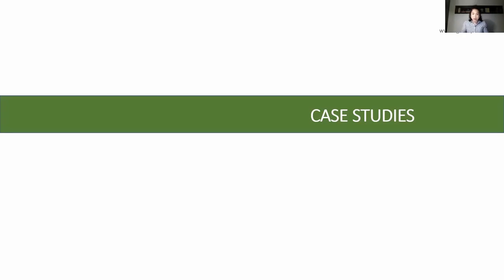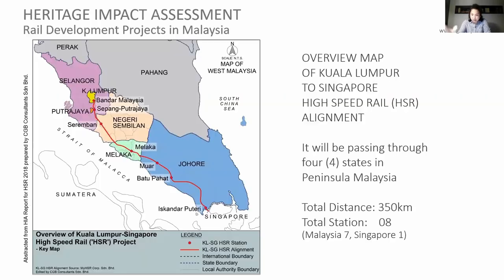Now I'll go into my case study — the key topic of my presentation. The project I'm sharing today is the High Speed Rail project from Kuala Lumpur to Singapore, called MyHSR. This study was carried out in 2017 and completed in 2018. It passes through four states in Peninsular Malaysia — Selangor, Negeri Sembilan, Malacca, and Johor — with a total distance of 350 kilometers and eight stations: seven in Malaysia and one in Singapore. Our study covers from Kuala Lumpur to Johor Bahru.